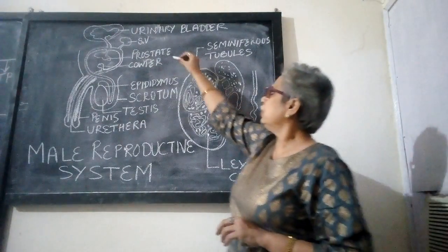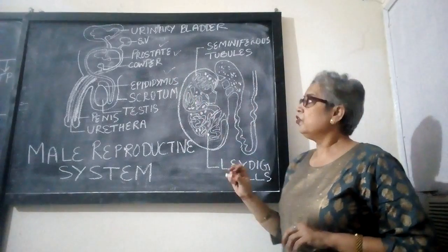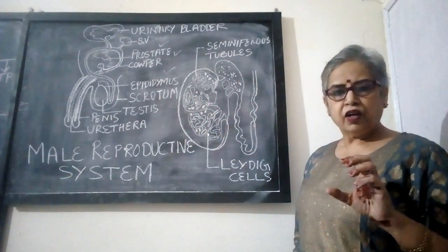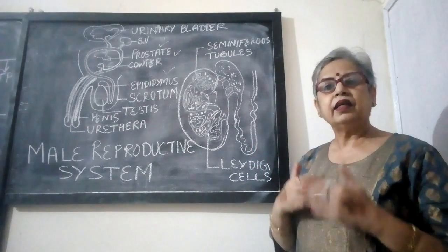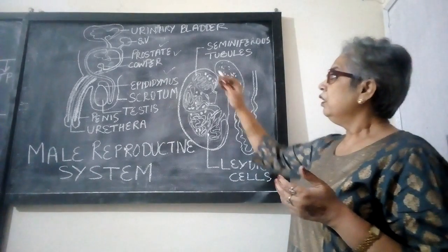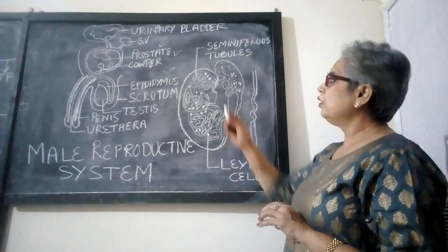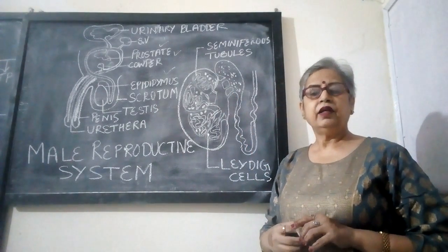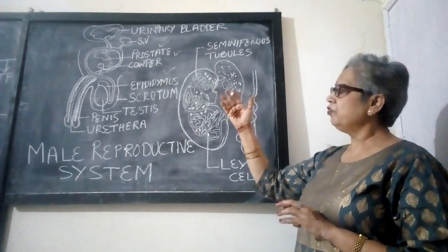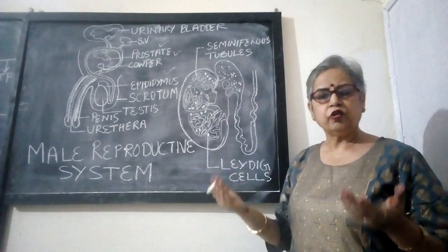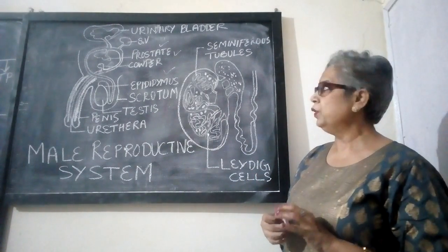What is the function of the seminal vesicles, prostate, and Cowper's glands? The sperms are motile, but the secretion of seminal vesicles increases their motility. The prostate gland makes the semen alkaline, and the Cowper's gland secretion helps in lubrication during sexual intercourse. The secretions together with sperms form semen, and these secretions also act as a nutrient medium for the sperms.